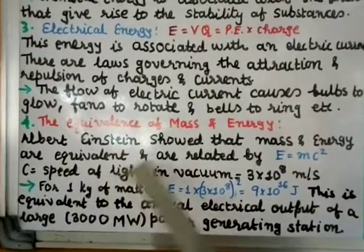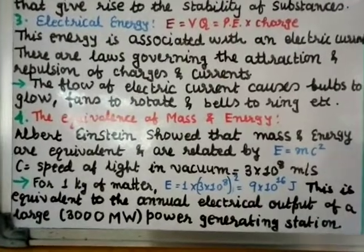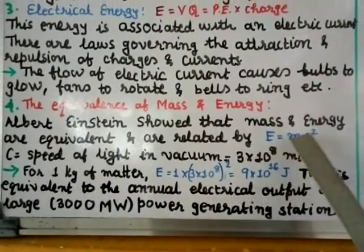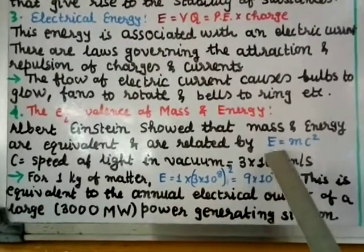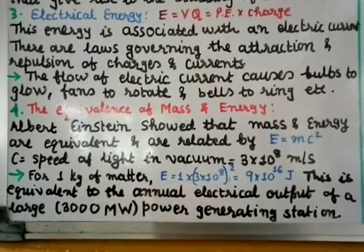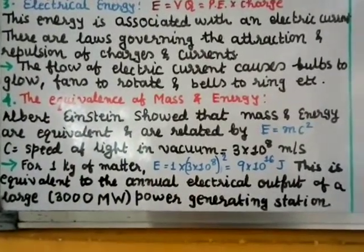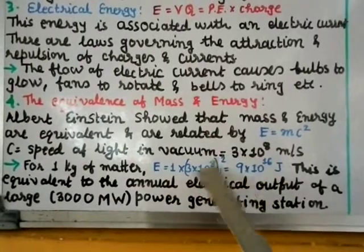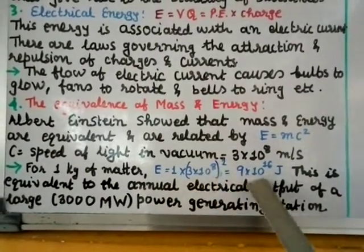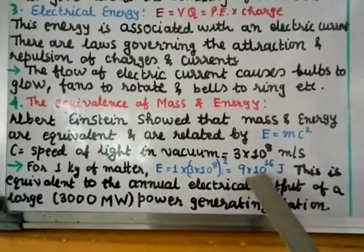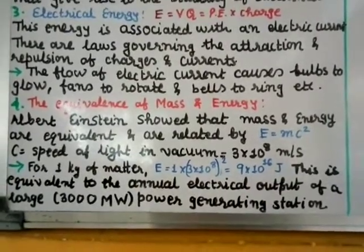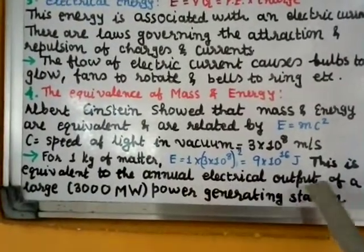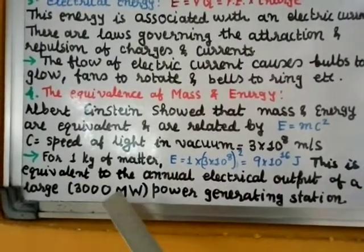Number four: The Equivalence of Mass and Energy. Albert Einstein showed that mass and energy are equivalent and related by E = mc². Here E is energy, m is mass, and c is the speed of light in vacuum (3 × 10⁸ m/s). For 1 kg of matter: E = 1 × (3 × 10⁸)² = 9 × 10¹⁶ Joules, equivalent to the annual output of a large 3000 megawatt power station.